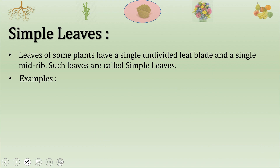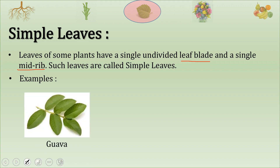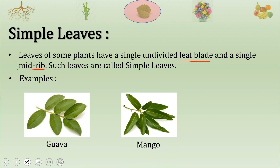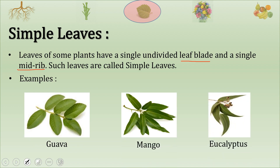Such leaves are called simple leaves. Examples are leaves of guava, leaves of mango, and leaves of eucalyptus — these are examples of simple leaves.